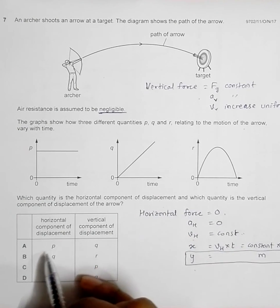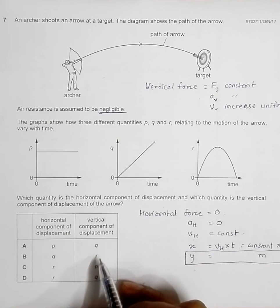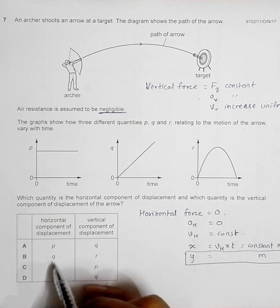Going to the answer choices, it's Q in choice B, and there's no other choice where Q is present.